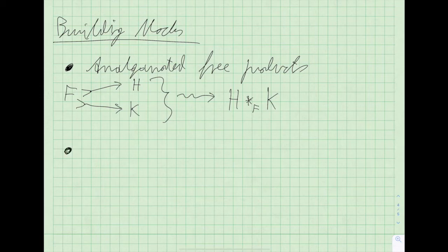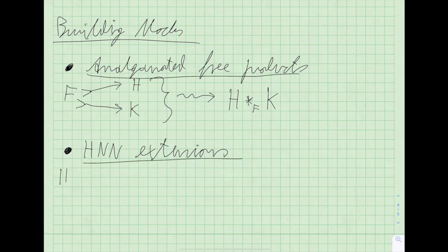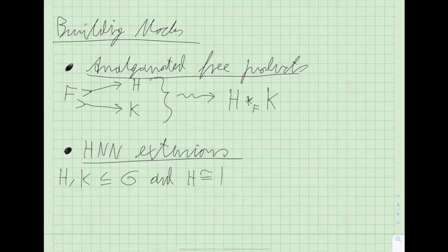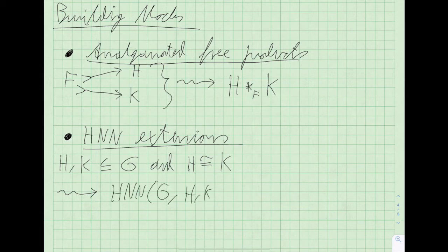The other building block of Bass-Serre theory is what is called HNN extensions. The setup is that you have two subgroups, say H and K, of a group G, and that these two subgroups are actually isomorphic. From this, you can build the HNN extension of G relative to H and K, sometimes denoted G*_{H,K}.